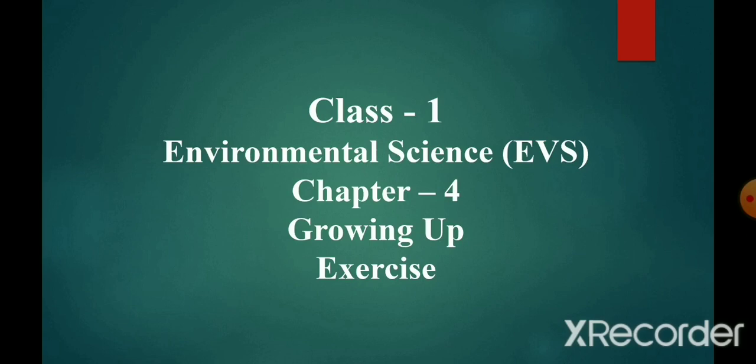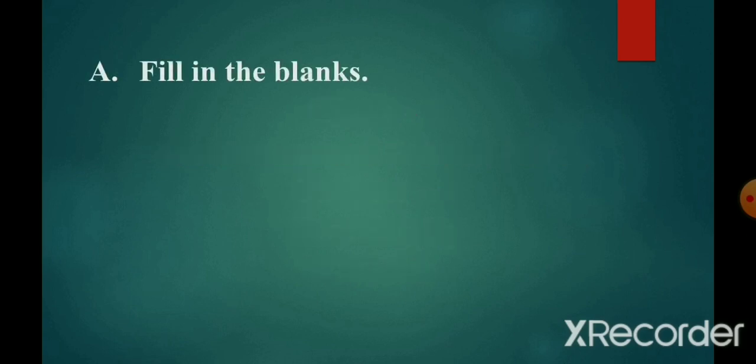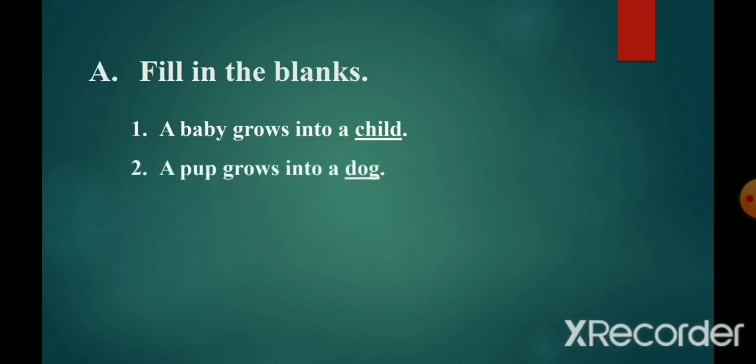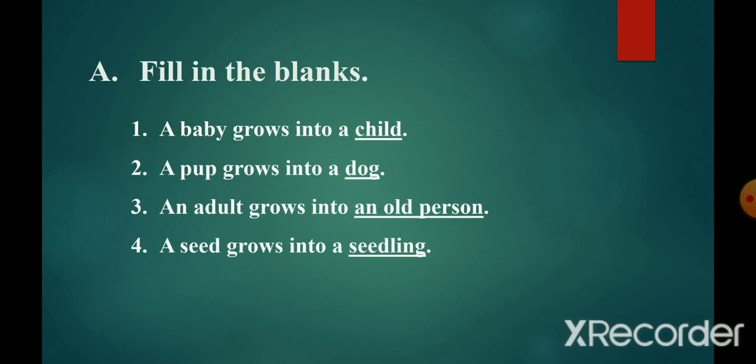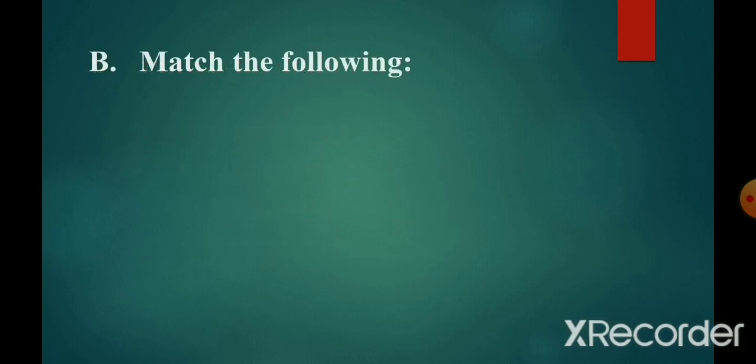Section A: Fill in the blanks. Number one: A baby grows into a child. Number two: A pup grows into a dog. Number three: An adult grows into an old person. Number four: A seed grows into a seedling.